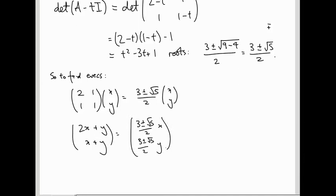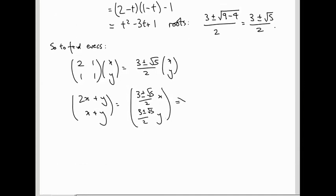So the first equation is 2x plus y, so y equals, let's subtract the 2 onto this side. Subtracting 2 from 3 over 2 is going to give minus a half, so what we end up with is minus 1 plus or minus root 5 over 2, x. And the second equation, let's keep the x on this side, and take the y over, so subtracting 1 lot of y from 3 halves will give us 1 half, so we end up with 1 plus or minus root 5 over 2, y.